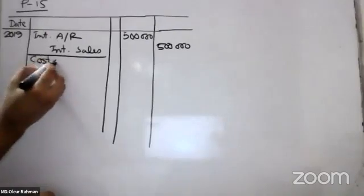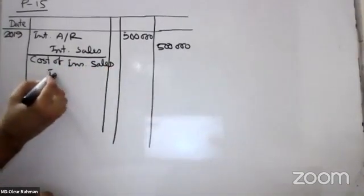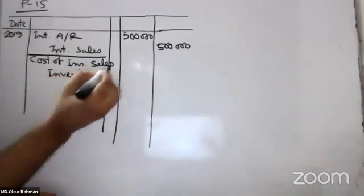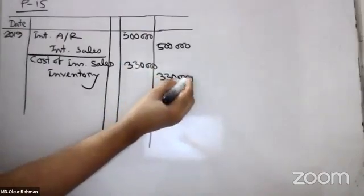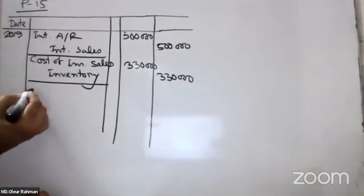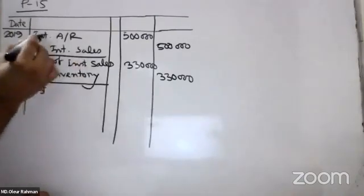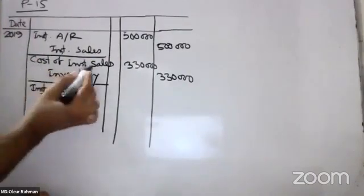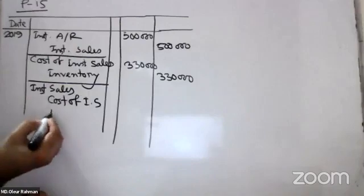Cost of Instrument Sales — Debit. Inventory, Inventory, Credit. Gross Profit General. Instrument Sales Debit, Instrument Sales. Cost of installments credit, deferred gross profit.